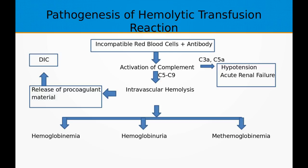During intravascular hemolysis, red blood cells are broken down inside the blood vessel, so hemoglobin is released into the blood causing hemoglobinemia. This hemoglobin is also excreted in the urine causing hemoglobinuria, and there will also be methemoglobinemia. Intravascular hemolysis also results in release of procoagulant material from red blood cell stroma, activating the coagulation system and ultimately resulting in disseminated intravascular coagulation (DIC).